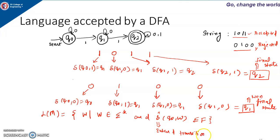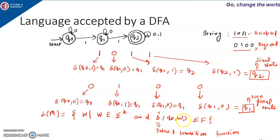In upcoming videos I will explain what the extended transition function is. For now, you should know that the extended transition function takes two parameters: the start state and the string we want to check. When we want to check whether a particular string is accepted or rejected, we use the extended transition function. If we get a final state, the string is accepted; if we do not get a final state, it is not accepted.